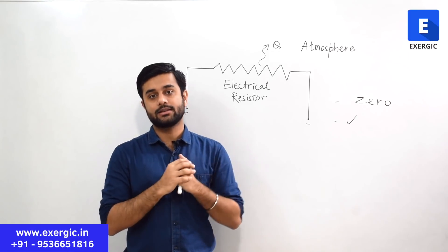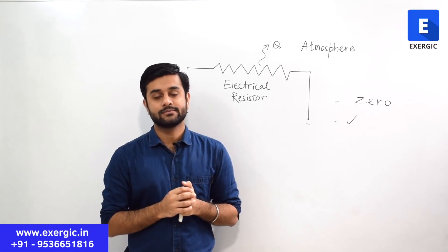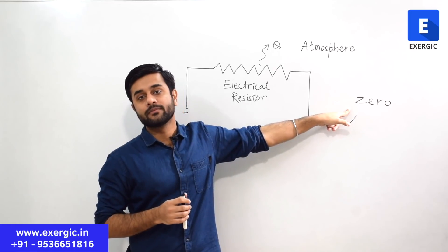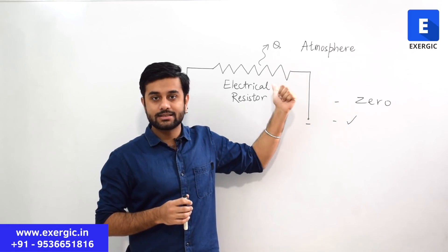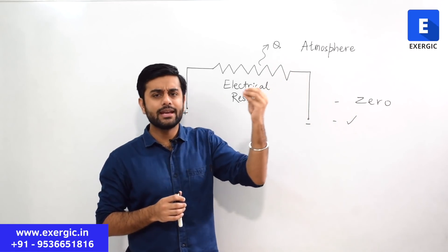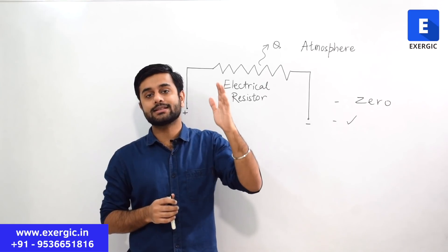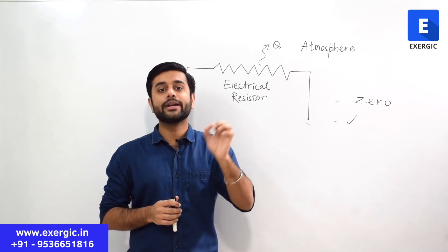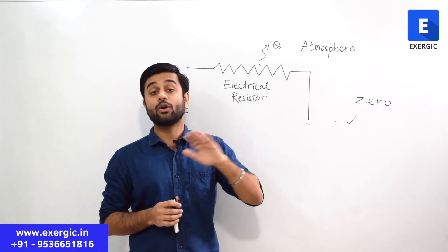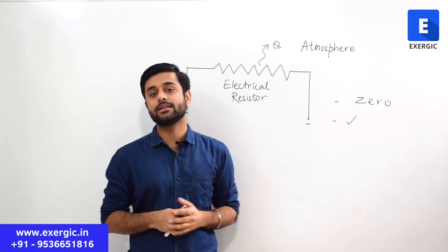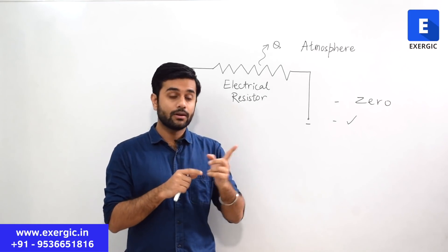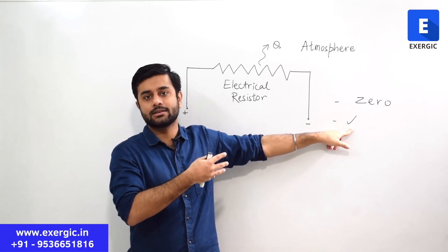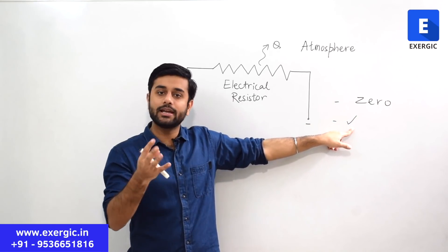Which of them is correct? The first one is correct. The change in entropy of this electrical resistor — or any such system which has reached steady state — is going to be zero. There will not be any change in entropy. If this is true, then the second explanation is definitely incorrect.